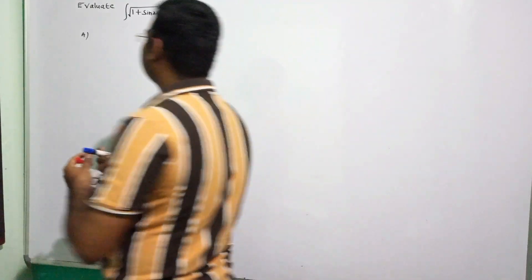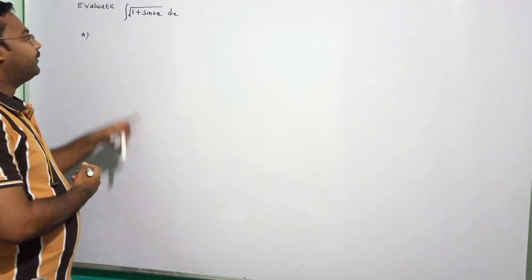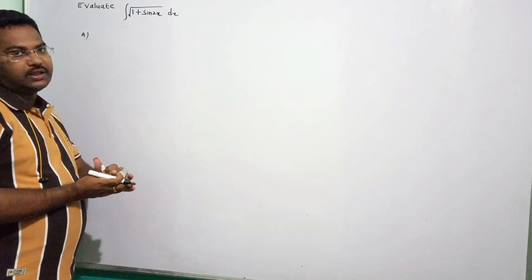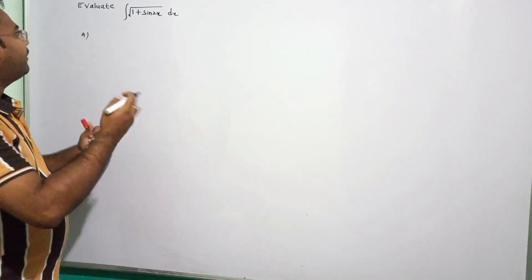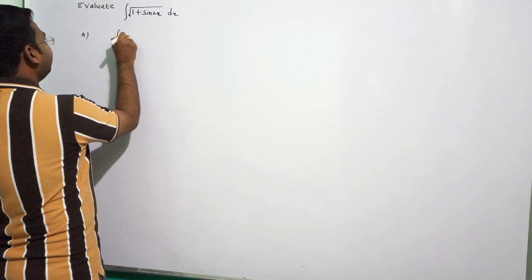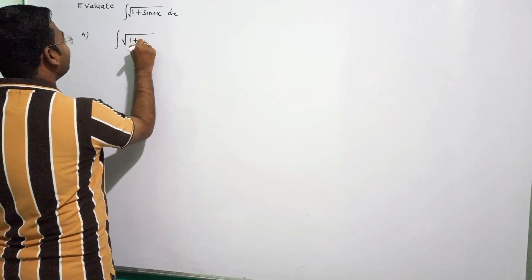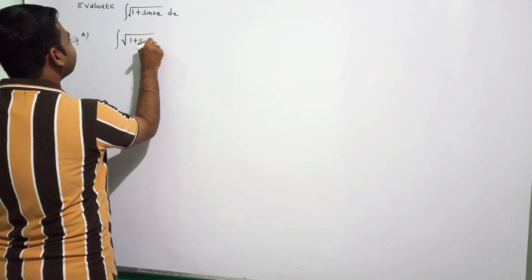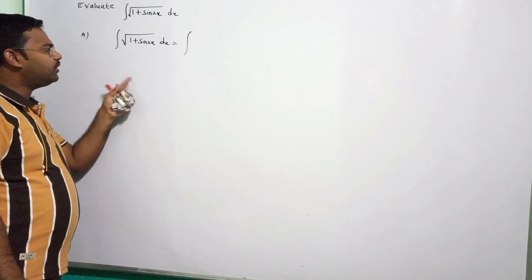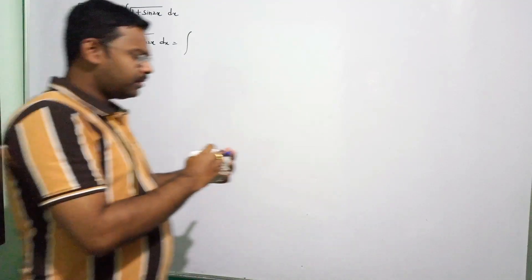Next problem: evaluate integral of square root of (1 + sin2x) dx. So, integral of √(1 + sin2x) dx. We apply the sin2x formula — sin2a = 2sinA·cosA.